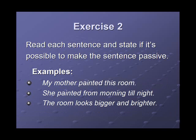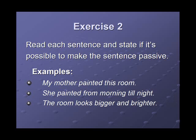Second sentence: she painted from morning till night. Is it possible to change it? No. In this sentence, the verb 'to paint' is not transitive — there is no object. Third sentence: the room looks bigger and brighter. Can we change it? No, it's not possible. The verb 'looks' is not transitive; there is no object.